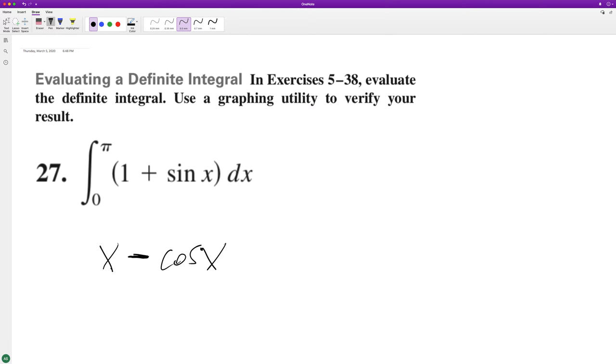So next what happens here is going from zero to pi, plug these in, we end up with pi minus the cosine of pi minus zero minus the cosine of zero.